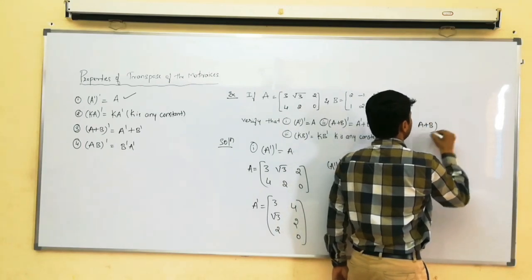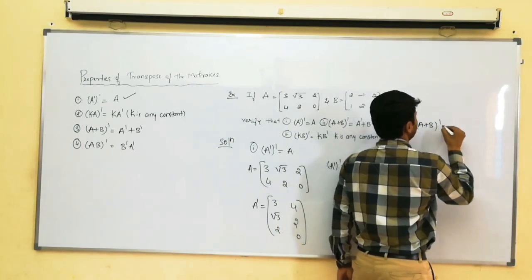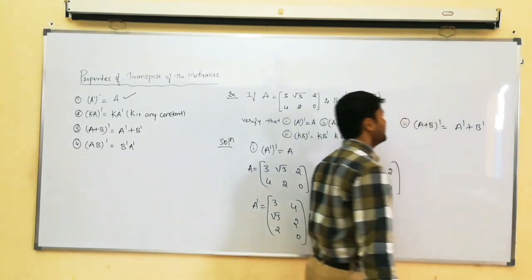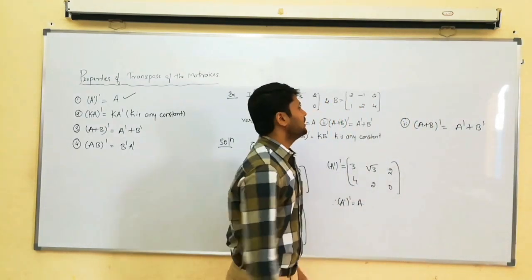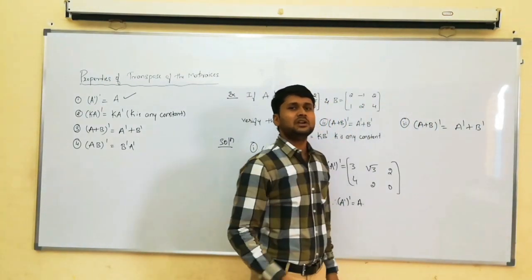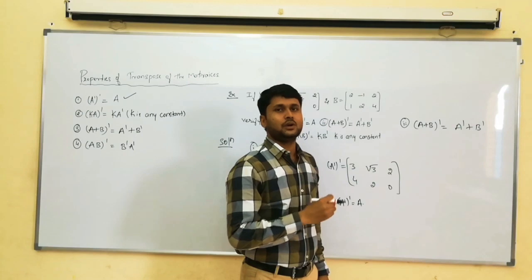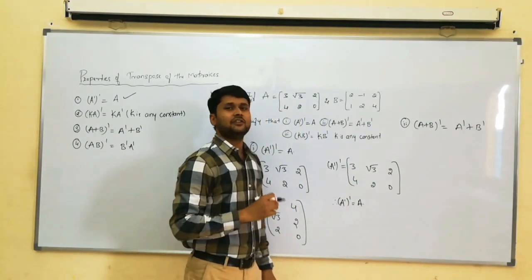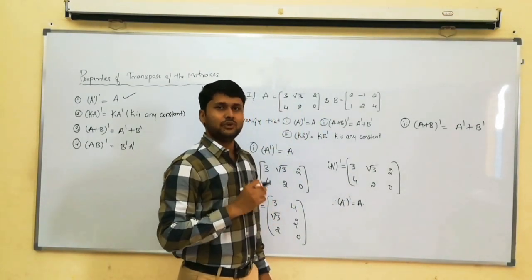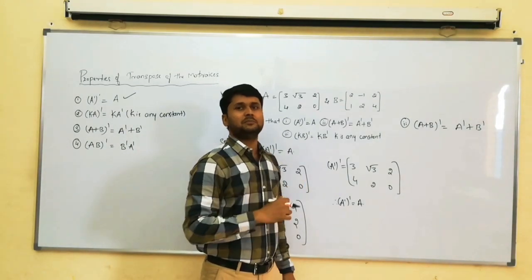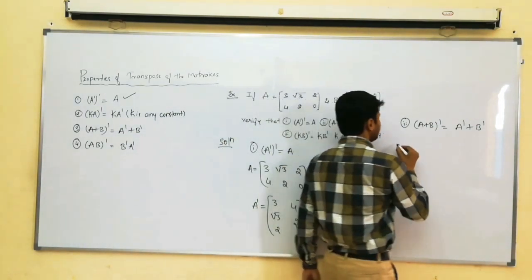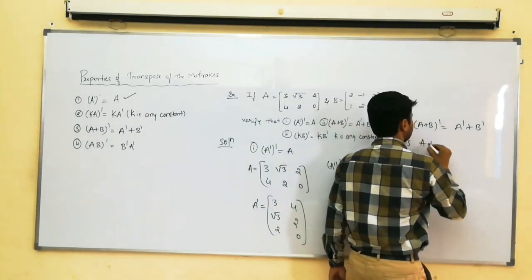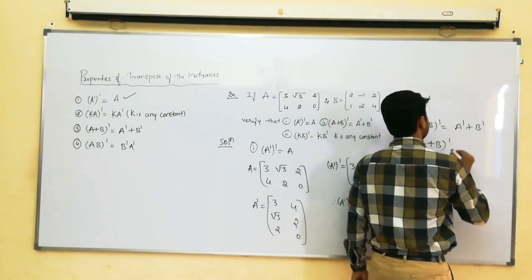For the second example: A plus B whole dash is equal to A dash plus B dash. First, consider the LHS term. Here we first have to find the A plus B matrix, then write its transpose. Consider LHS: A plus B whole dash.